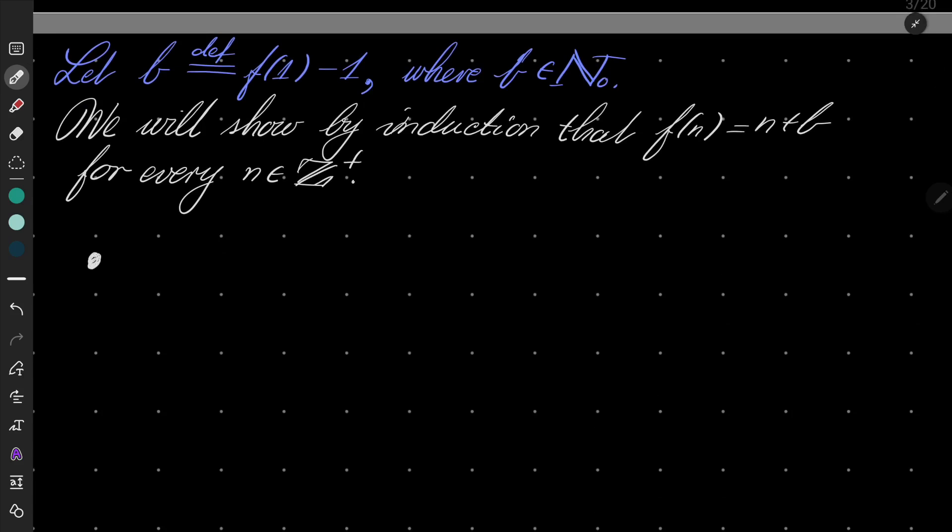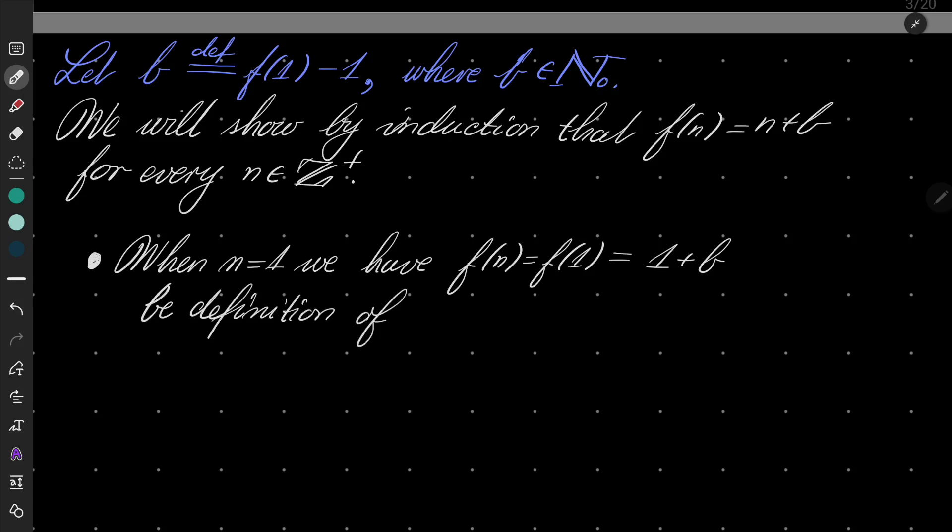First, let's check what happens at n = 1. When n = 1, we have f(n) = f(1) = 1 + b by definition. Nothing special here.